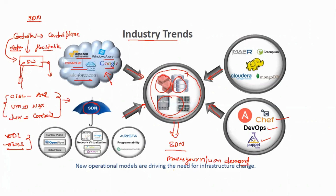With SDN, you express your desire in the controller — this is my source, this is my destination, and they will communicate on a particular port. As soon as you connect the servers and build the application, the network is ready. There is no manual effort needed to configure load balancers, security firewalls, switches, or routers. An application can be commissioned within a week instead of a hundred days.